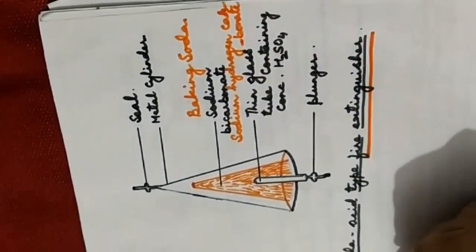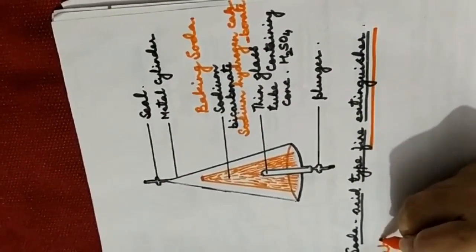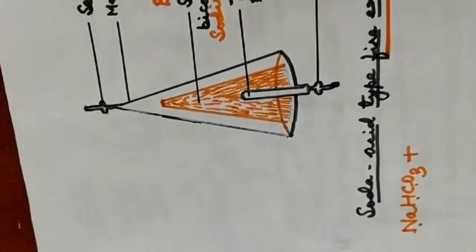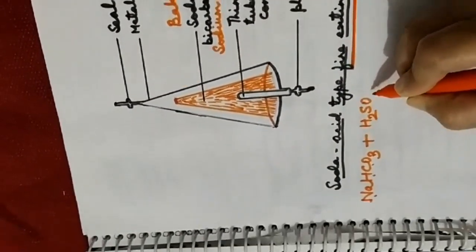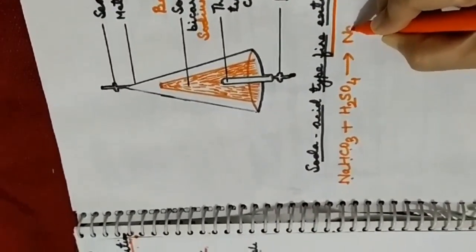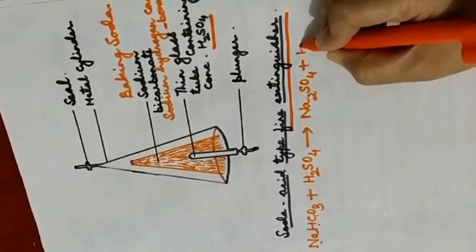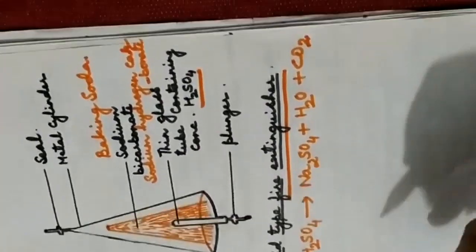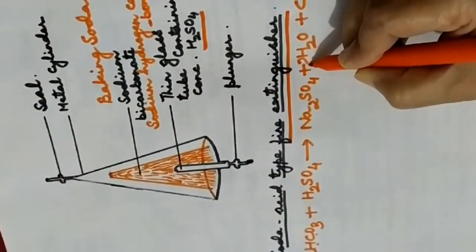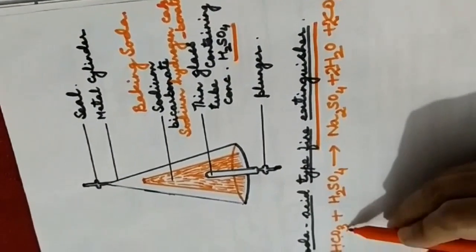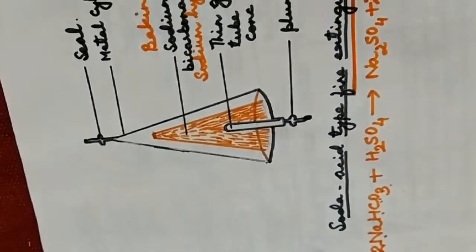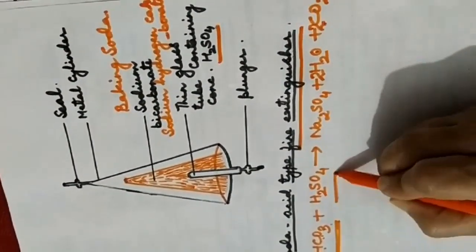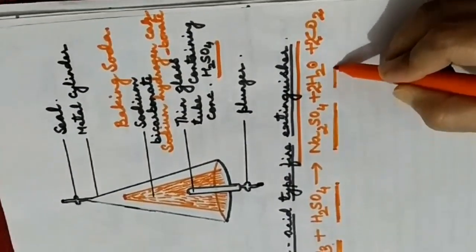The reaction is: sodium hydrogen carbonate (sodium bicarbonate) reacts with sulfuric acid and forms sodium sulfate plus water and carbon dioxide gas. Balancing the equation requires coefficients of 2 on both sides. So sodium bicarbonate reacts with sulfuric acid and forms sodium sulfate, water, and carbon dioxide.